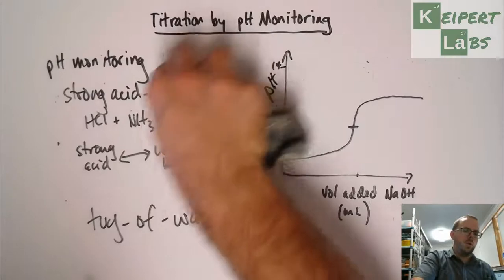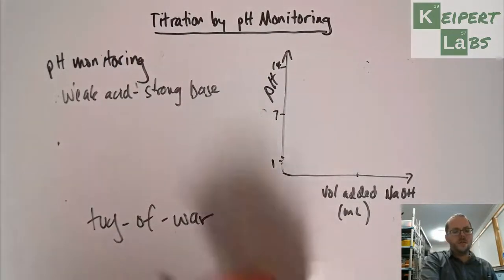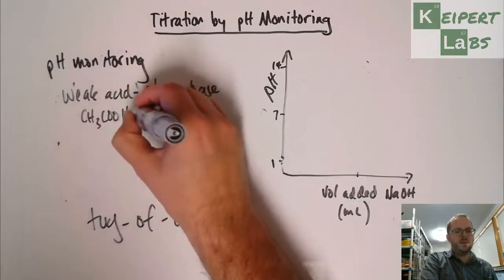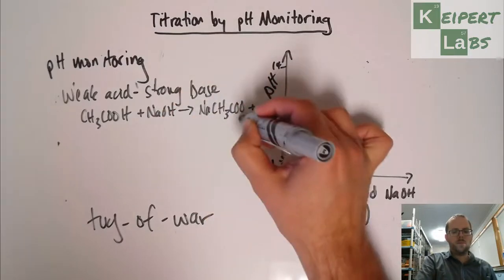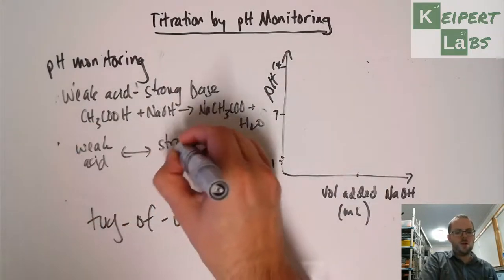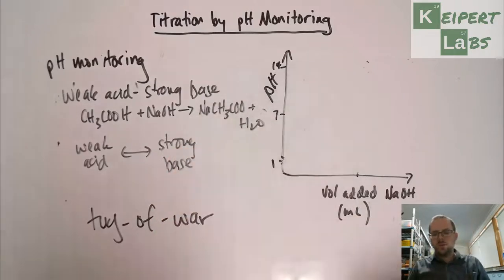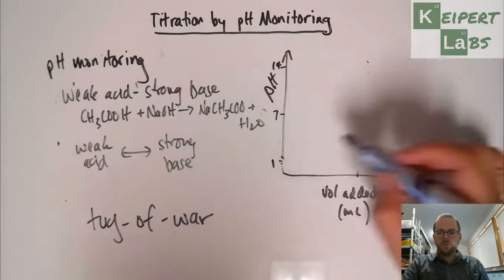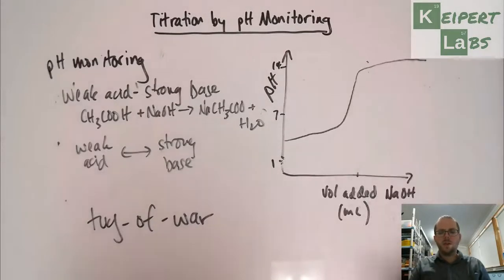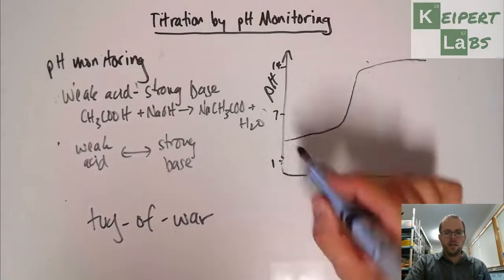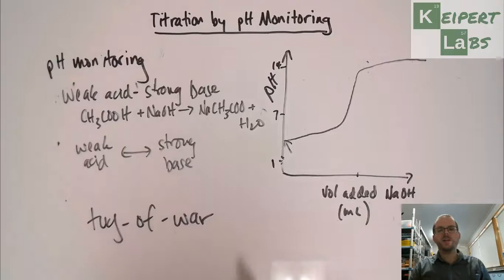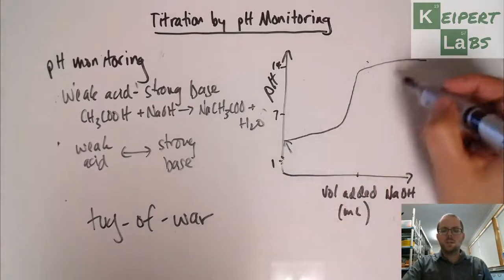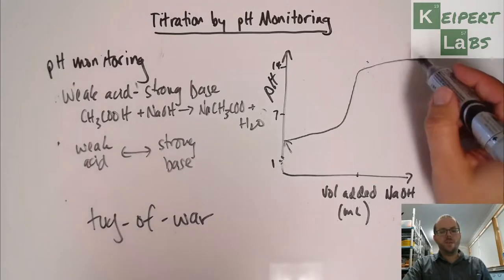Now we're going to think about weak acid, strong base. So looking at a scenario of weak acid, strong base—say acetic acid plus sodium hydroxide forming sodium acetate plus water. So we've got weak acid and strong base in our tug-of-war analogy. When we do our curve, it's going to start off up here. It starts off at a higher pH because remember that our acetic acid, which is a weak acid, will have a higher pH than HCl at the same concentration. Because we're not producing as many hydronium ions. And then we end up with a very strongly basic pH because we're forming a sodium hydroxide solution.